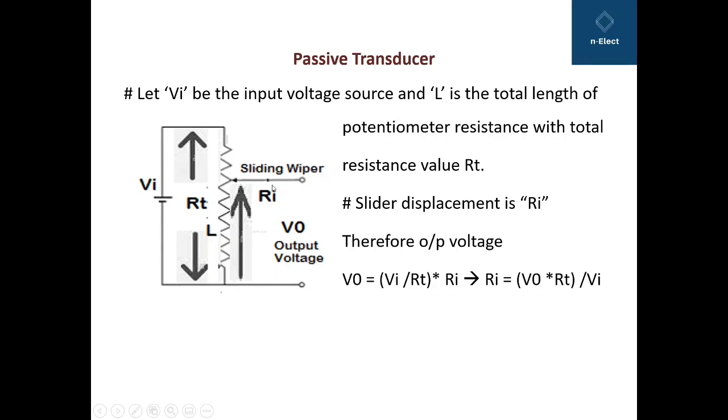Slider displacement is RI. Therefore output voltage V0 will be equal to the total current flowing through this resistance multiplied by the resistance across which we want the output voltage, that is RI. Now the total current flowing in this loop is total voltage VI divided by total resistance RT. Therefore the current VI/RT multiplied by resistance RI will equal V0.